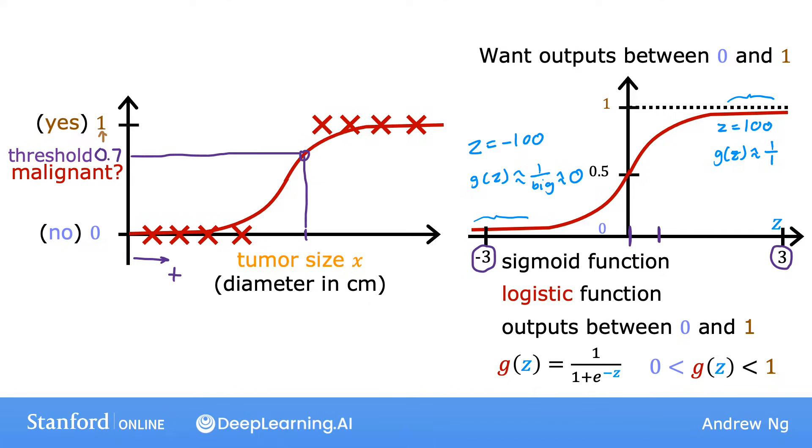Also, in the sigmoid function, when z is equal to 0, then e to the negative z is e to the negative 0, which is equal to 1. And so g of z is equal to 1 over 1 plus 1, which is 0.5. So that's why it passes the vertical axis at 0.5.